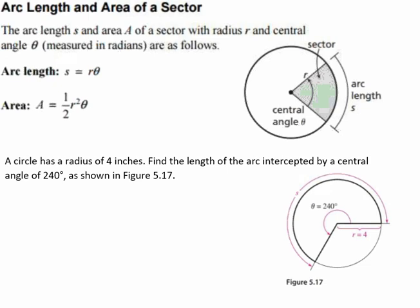In this video, we're going to be talking about arc length and the area of a sector. The arc length S and the area A of a sector with radius r and central angle theta, which is measured in radians, are as follows.